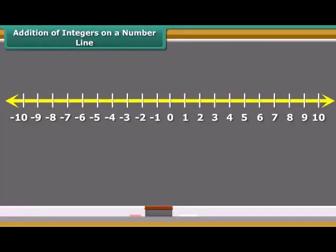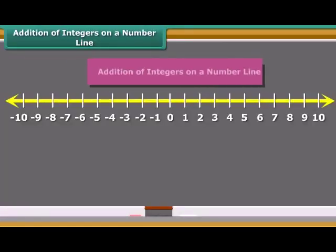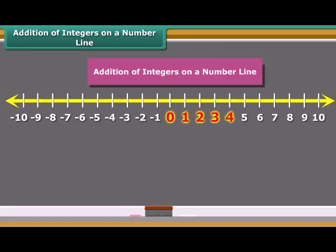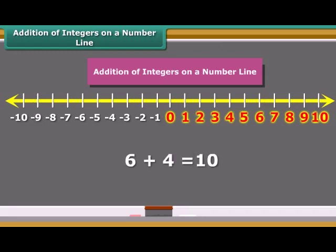Now we learn addition of two positive integers on a number line. If we add 6 and 4, we first move six steps to the right from 0, reaching 6. Then we move four more steps to the right of 6 and reach 10. Thus, 6 plus 4 equals 10.